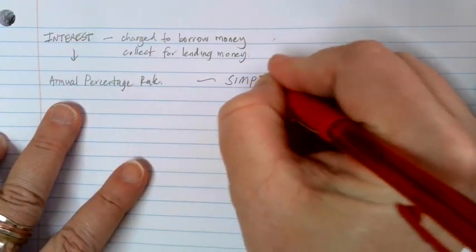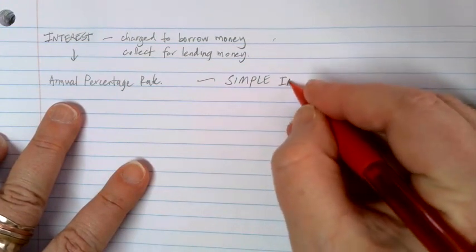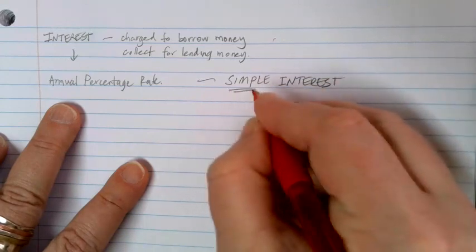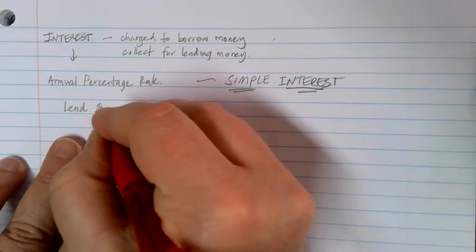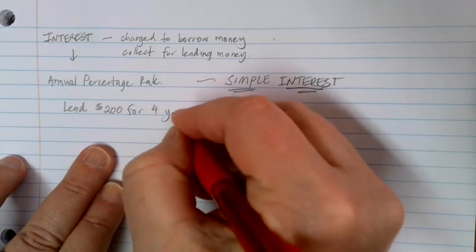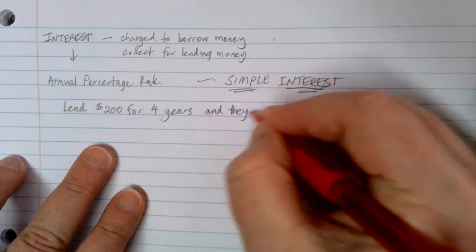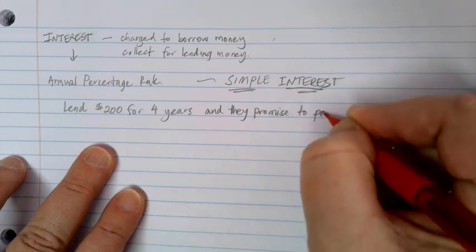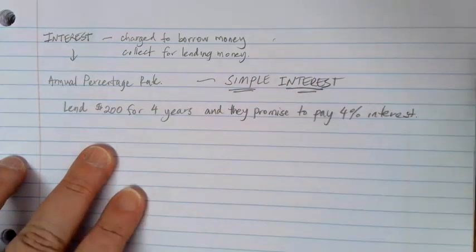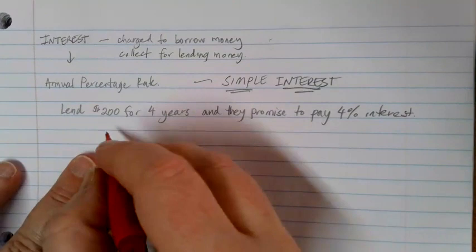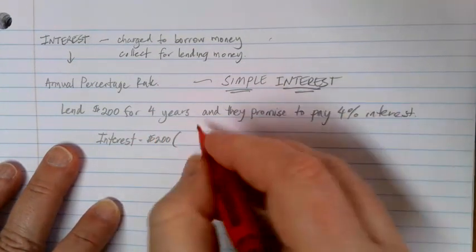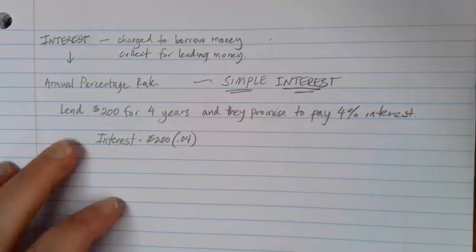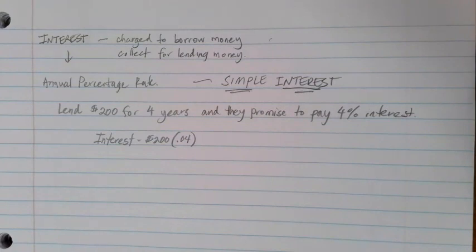The basics of all of our financial formulas come down to this idea of simple interest. With simple interest, let's take an example. Let's say that you are going to lend someone $200 for four years. If we want to figure out how much interest they would pay, your interest would be equal to the $200 that you lent them times 4%, which we multiply by 0.04. If we multiply 200 times 0.04, we get $8.